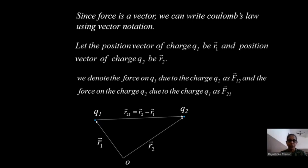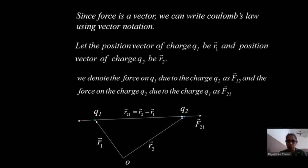R21 — in which direction will it be? It will be in this direction. When will we use R21? When we are finding the force on charge Q2 due to charge Q1. It will be the vector R21, which is R2 minus R1. So F21 is in this direction. Similarly, when I want to find the force on charge Q1 due to charge Q2, the vector we use is R12, which is R1 minus R2, and the force F12 will be in that direction. Now, let us discuss the unit vector — because whenever we talk about an expression, we multiply it with a unit vector.